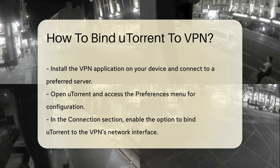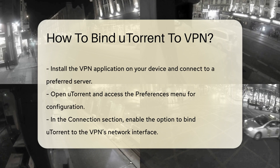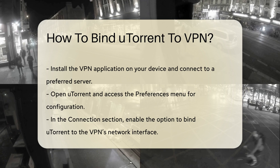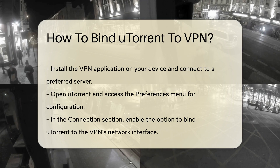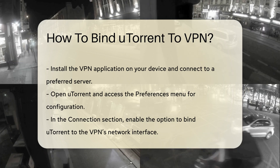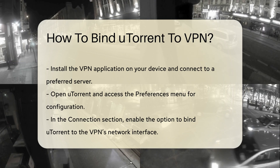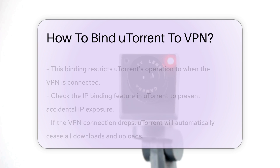In the Connection section, you will find options to configure the network settings. Here, you should enable the option to bind uTorrent to the VPN's network interface. This action restricts uTorrent to only operate when the VPN is connected.